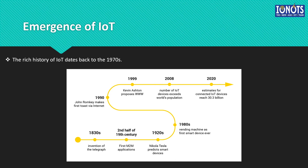In 1970, the actual idea of IoT was presented. In 1990, John Romke created a toaster that could be turned on or off over the Internet with the use of the TCP/IP protocols. In 1995, Siemens introduced the first cellular module built for M2M.